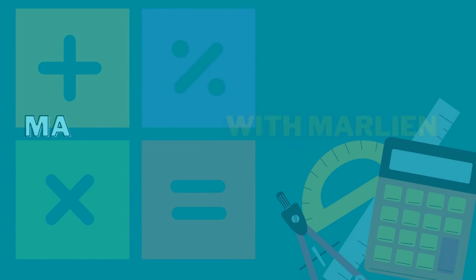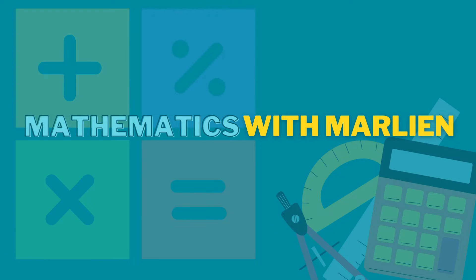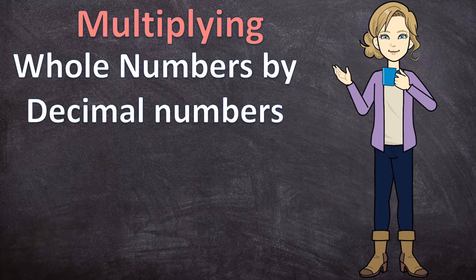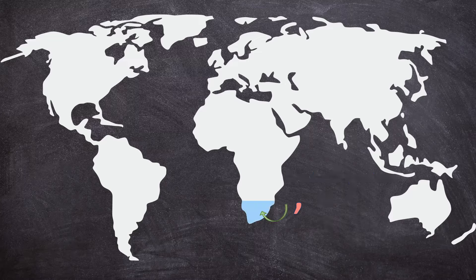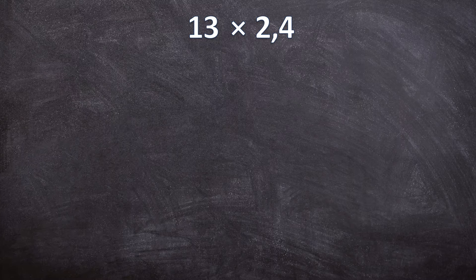Hello everyone and welcome to Mathematics with Marlene. In this video we'll be multiplying whole numbers by decimal numbers. Just a reminder: all around the world we use two different decimal separators — a decimal comma and a decimal point. Because I was born and raised in South Africa, I use the decimal comma. That doesn't change any rules except that I use a comma where you may use a point.